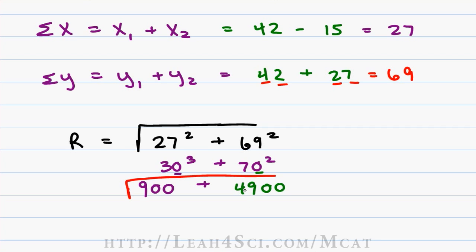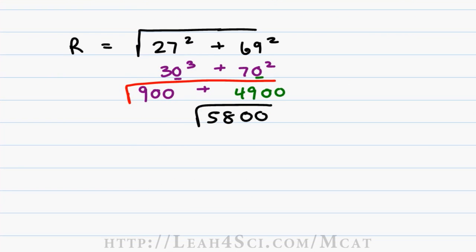Now we add 900 and 4900. If we look at 49 as 50, that's 59 so the answer will be 58 and then we have 5800 and finally we take the square root of that. I don't know the square root of 5800 but I do know that it's equal to the square root of 58 times the square root of 100.